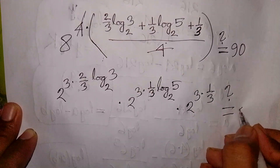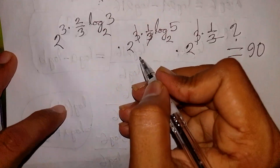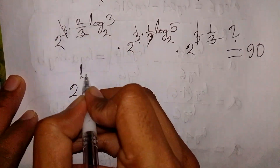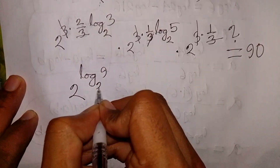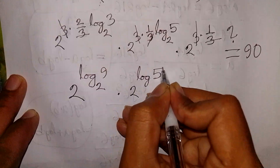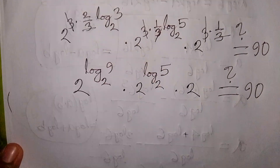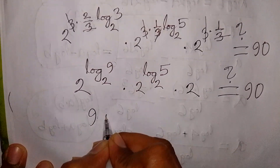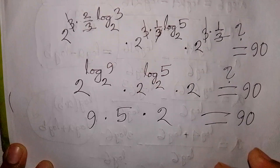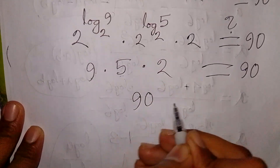Is it equal to 90? The 3s cancel, so we have 2 power of 2 log base 2 of 3, which is the same as log of 3 squared — that means base 2 of 9 — so it becomes 9. Times 2 power of log base 2 of 5, which equals 5. Times 2. So 9 times 5 equals 45, and 45 times 2 equals 90. So 90 equals 90, confirmed.